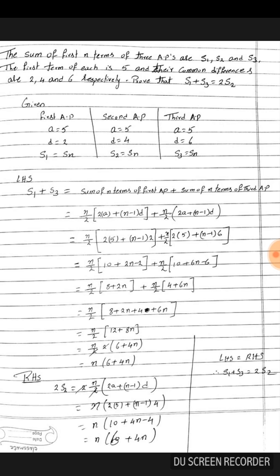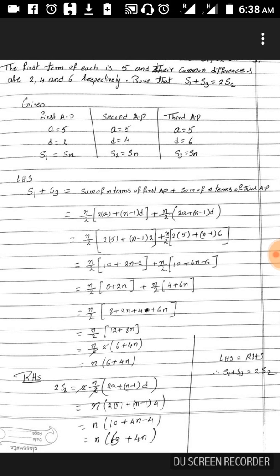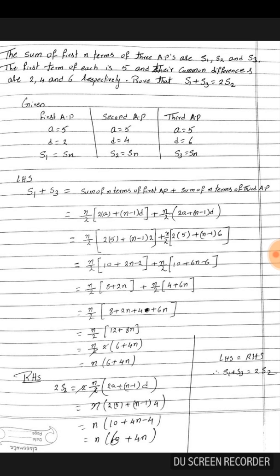For s1 we are comparing sn so we are taking n equal to 1. For s2 again we are comparing sn so we are taking n equal to 2. It is not like that. It is given that s1 is the sum of n terms of the first AP, s2 is the second AP, and s3 is the third AP.